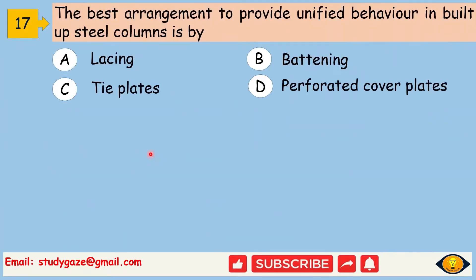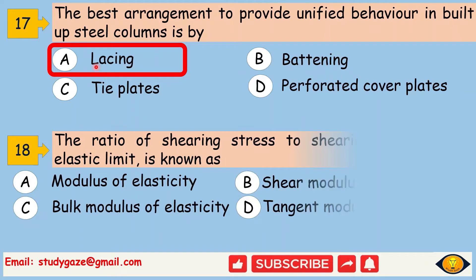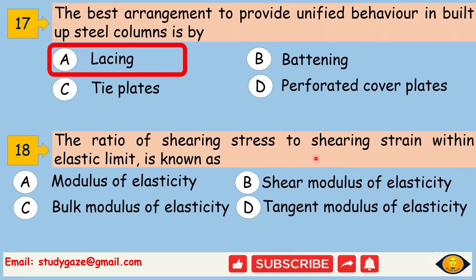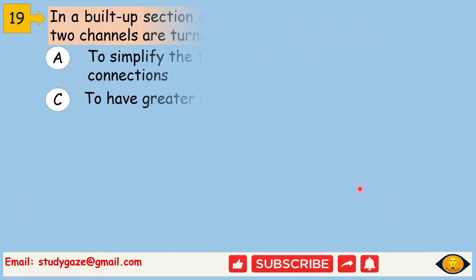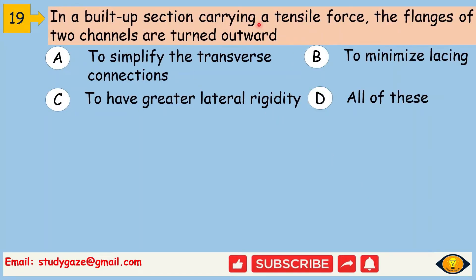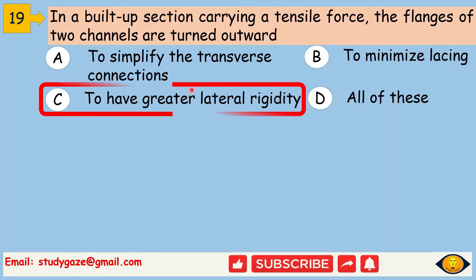The best arrangement to provide unified behavior in a built-up steel column is lacing. Next, the ratio of shearing stress to shearing strain within elastic limit is known as shear modulus of elasticity. Next, in a built-up section carrying a tensile force, the flanges of two channels are turned outward to have greater lateral rigidity.